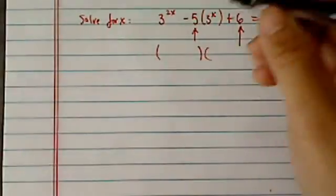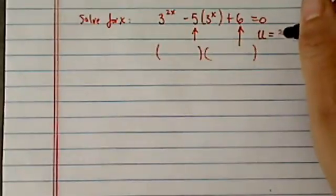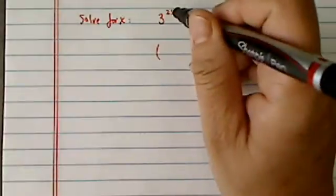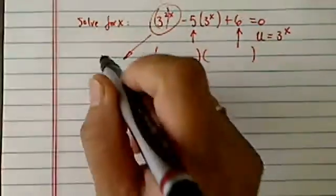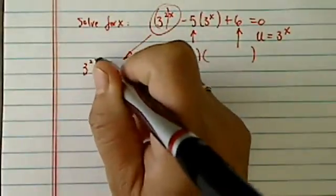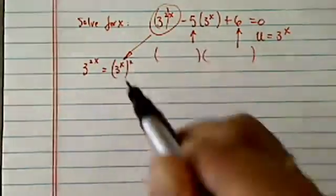Before you can factor, write a variable substitution: u equals 3 to the x. Here we have a term that looks out of place, 3 to the 2x. That's really equal to 3 to the x, squared.